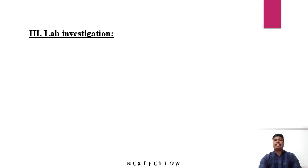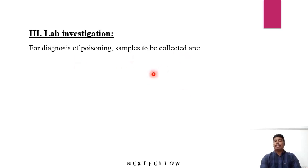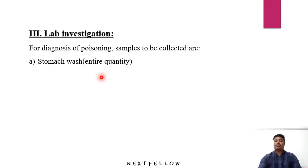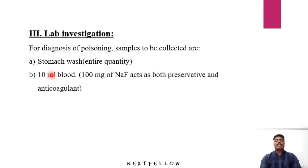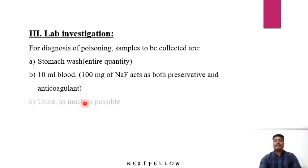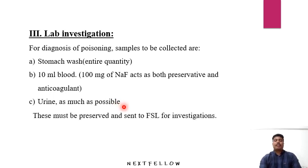The third point is lab investigations. For diagnosis of poisoning, the samples to be collected are: first, the entire quantity of stomach wash, which should be preserved; second, 10 ml of blood preserved in 100 mg of sodium chloride, which acts as both a preservative and anticoagulant; and third, as much urine as possible, because many toxins filtered by the kidneys are secreted in urine. These must be sent to the forensic science lab for further investigation.